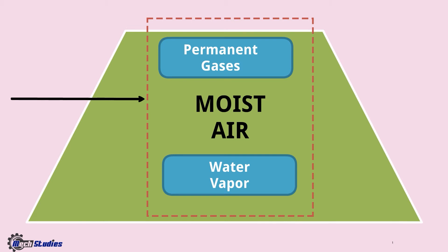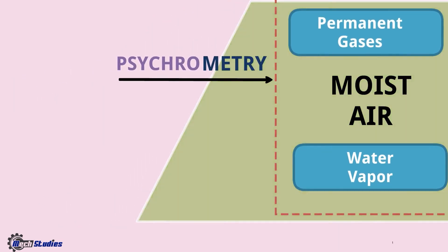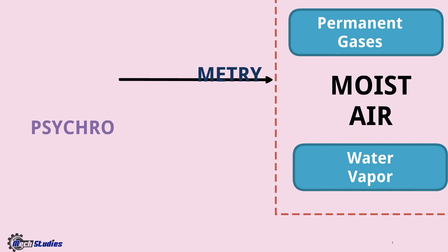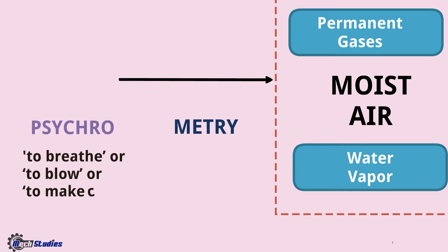Psychrometry means the study of properties of moisture. Let's see the meaning of psychrometry. It consists of psychro and metry. Psychro means to breathe, to blow, or to make cold.